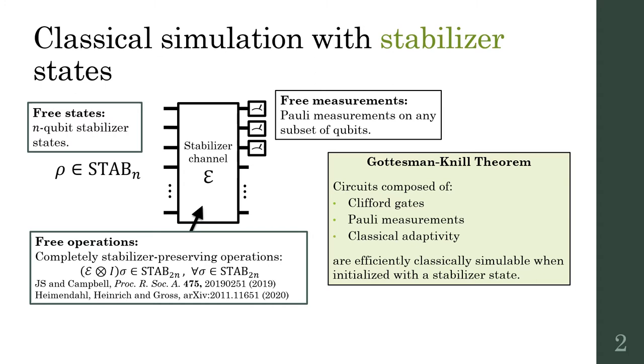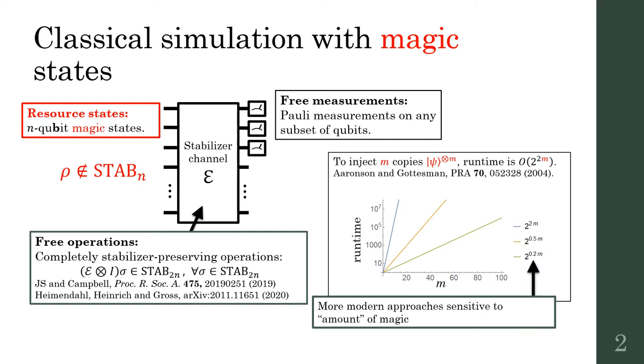The goal of this work is to use insights from the resource theory of magic to design improved classical simulation methods for many-qubit quantum circuits based on the stabilizer formalism. Stabilizer states have an efficient classical description and are treated as free states in our resource theory. Free operations preserve this set. The Gottesman-Knill theorem tells us that quantum circuits initialized with stabilizer states and comprised of stabilizer-preserving operations are efficiently simulable by classical computers.